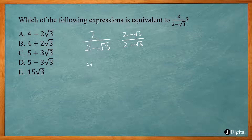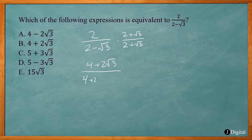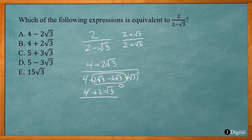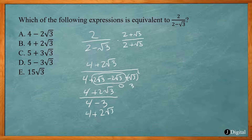On top, 2 times 2 is 4, and 2 times square root of 3 is 2 square root of 3. On the bottom I'll do FOIL: 2 times 2 gives 4, then 2 times square root of 3 gives 2 square root of 3, and negative square root of 3 times 2 is negative 2 square root of 3, and negative square root of 3 times square root of 3 gives negative square root of 3 squared. On the bottom, 2 square root of 3 minus 2 square root of 3 gives 0, and square root of 3 squared is just 3. So the bottom is 4 minus 3.